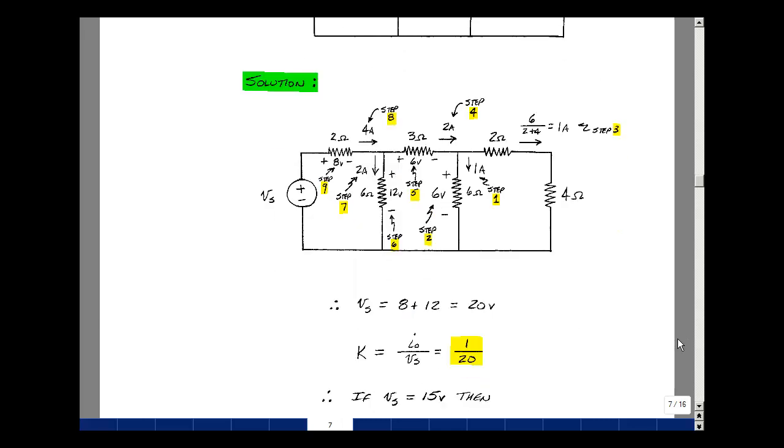I can now form the ratio of any output over any input. And that doesn't change with the value of Vs. So in this case here, we have 1 amp out for 20 volts in. Now, if the input is 15 volts...